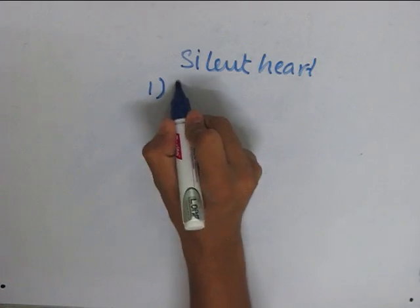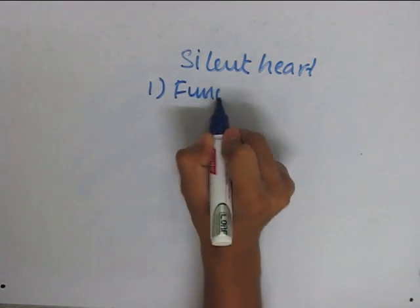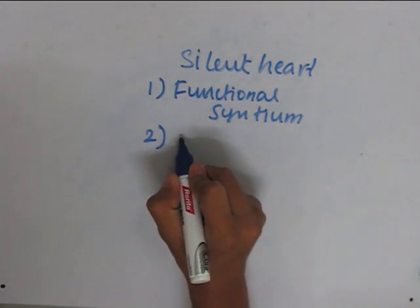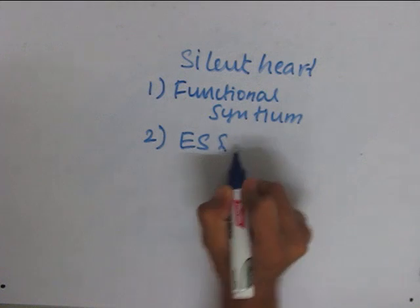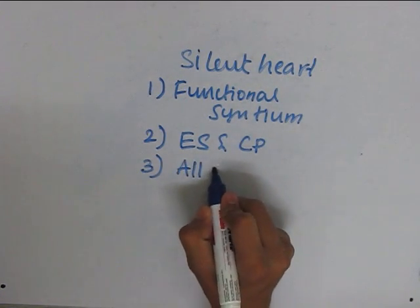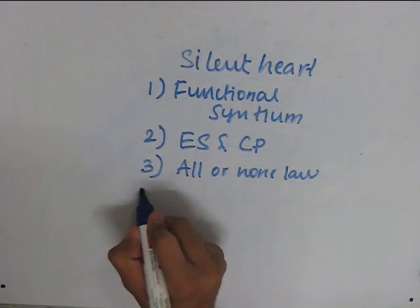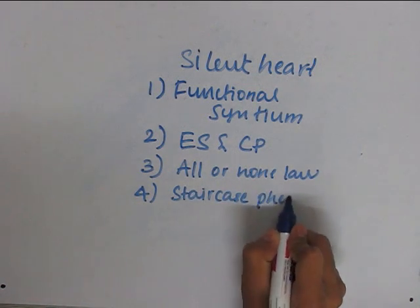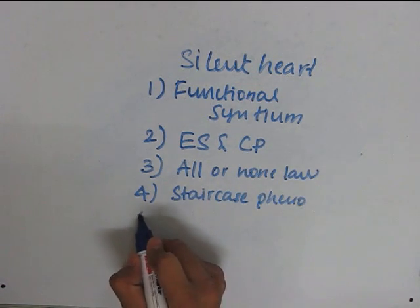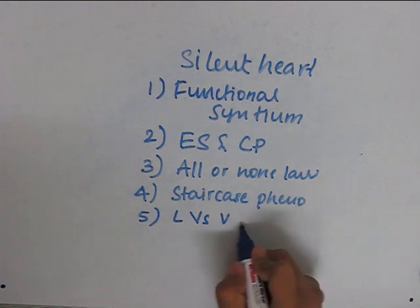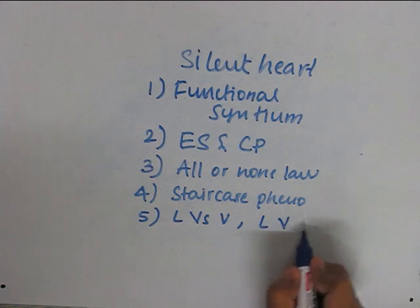Now I will list the properties of a silent heart. It behaves as a functional syncytium. There is a property known as extrasystole and compensatory pause. The cardiac muscles behave according to the all-or-none law. There is a phenomenon known as the staircase phenomenon. And two graphs: the load versus velocity graph and the length versus tension graph.